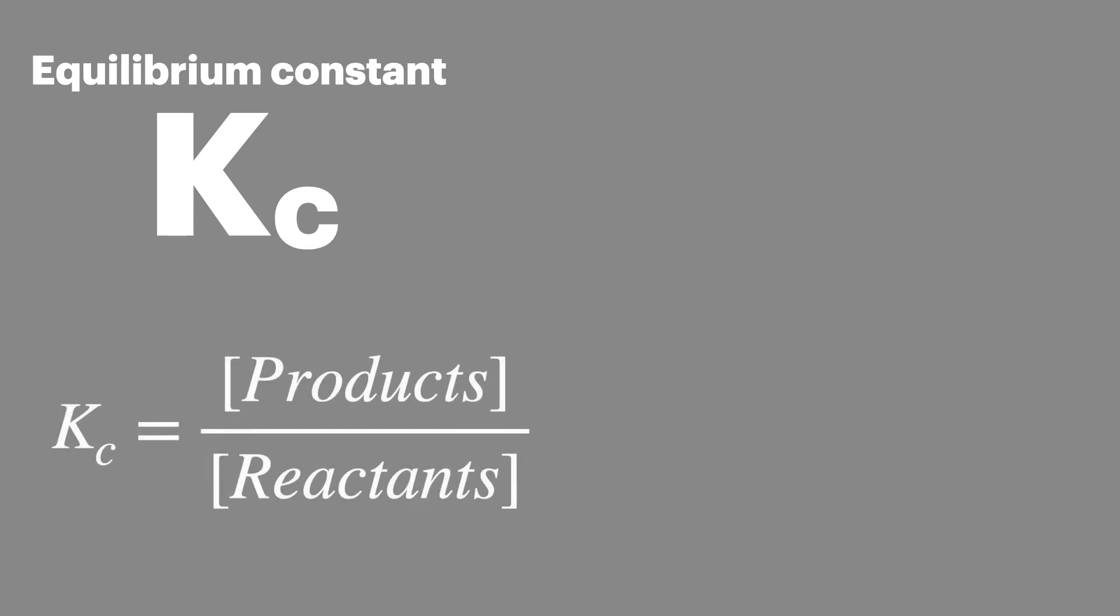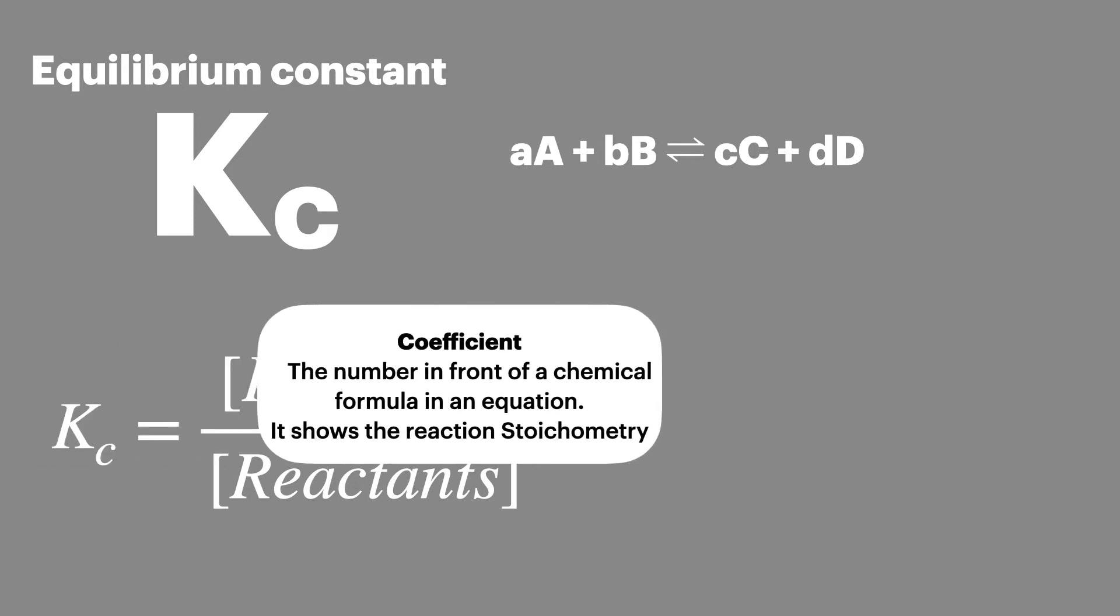We calculate Kc by dividing the concentration of the products by the concentration of the reactants. If we take a generic equation we can use the lowercase letters to represent any coefficients and the uppercase letters to show the elements or compounds in the equation. A coefficient is the number in front of a chemical formula in an equation and it shows the reaction stoichiometry.